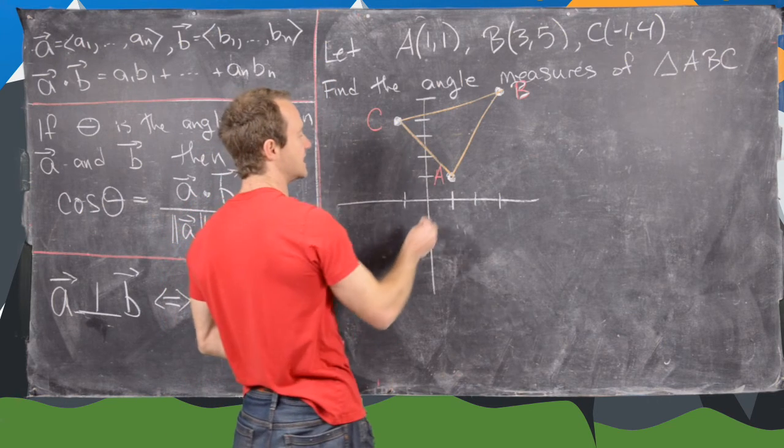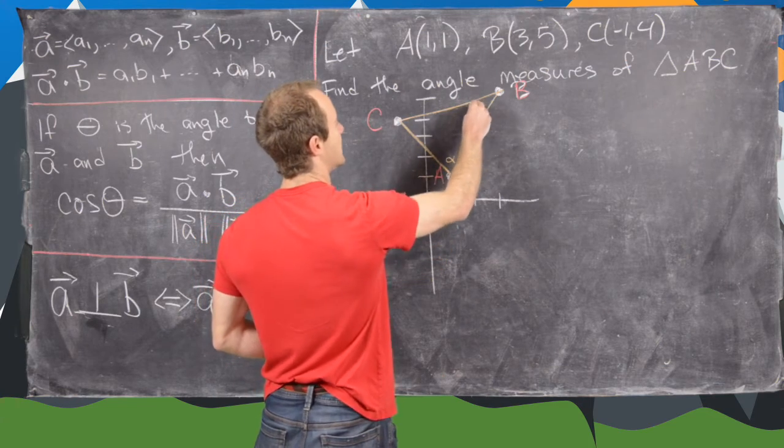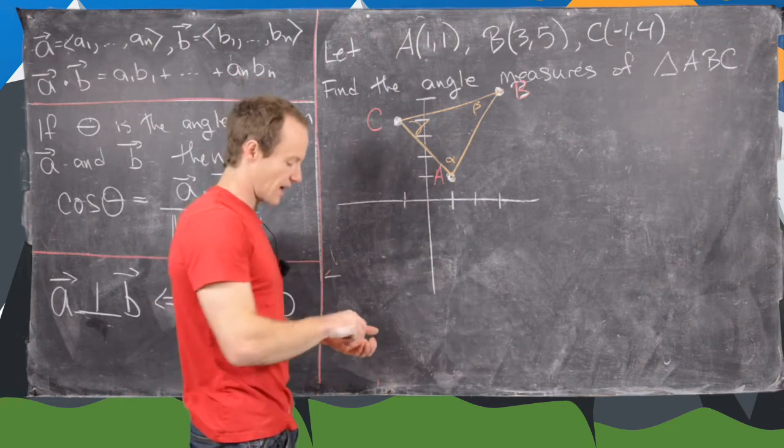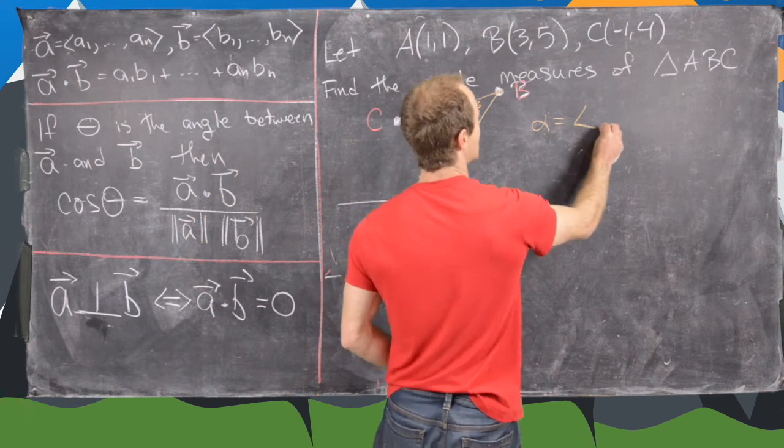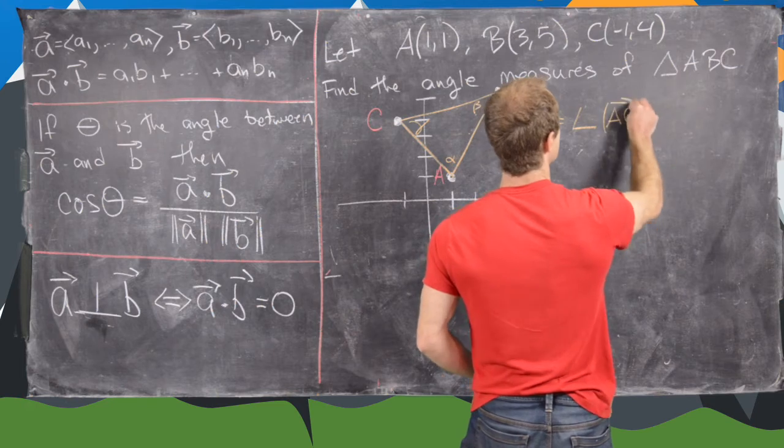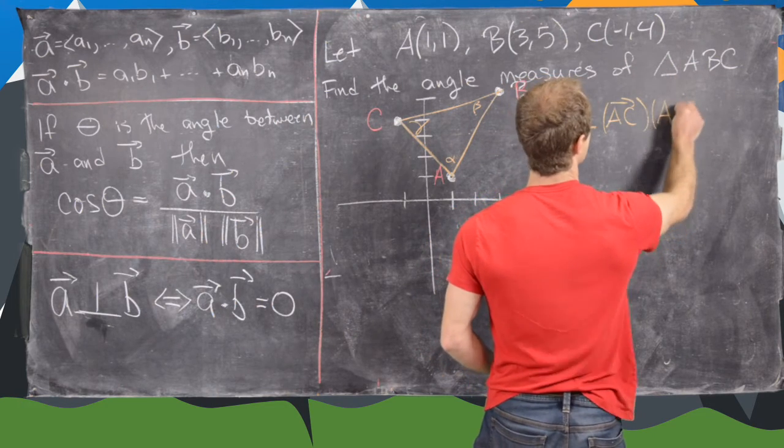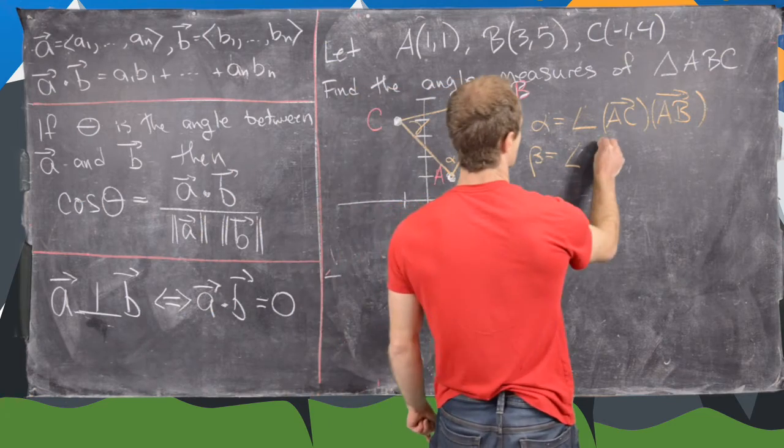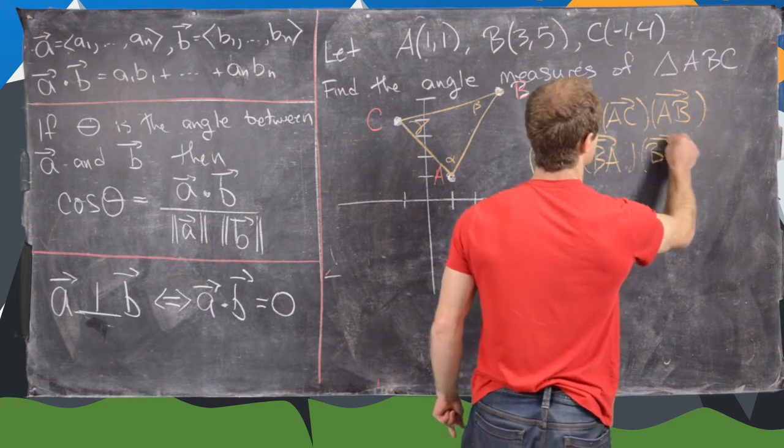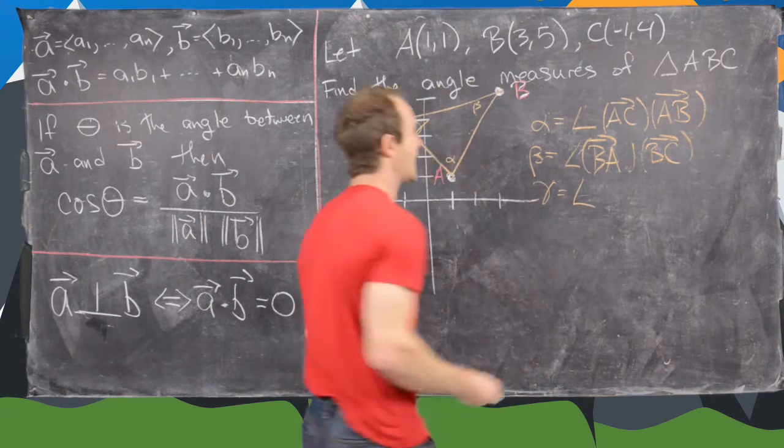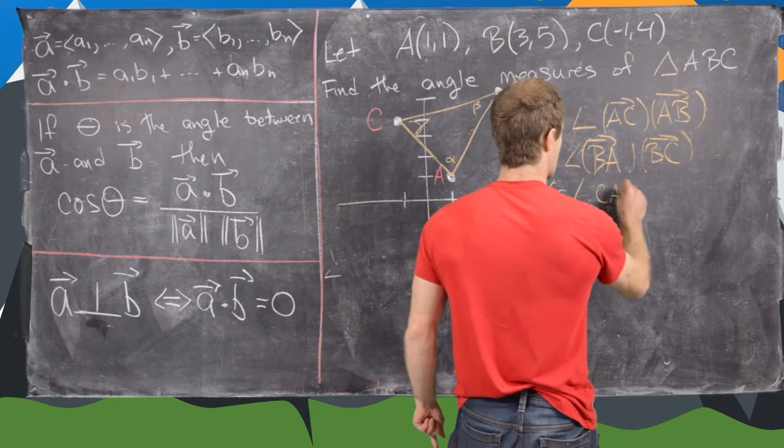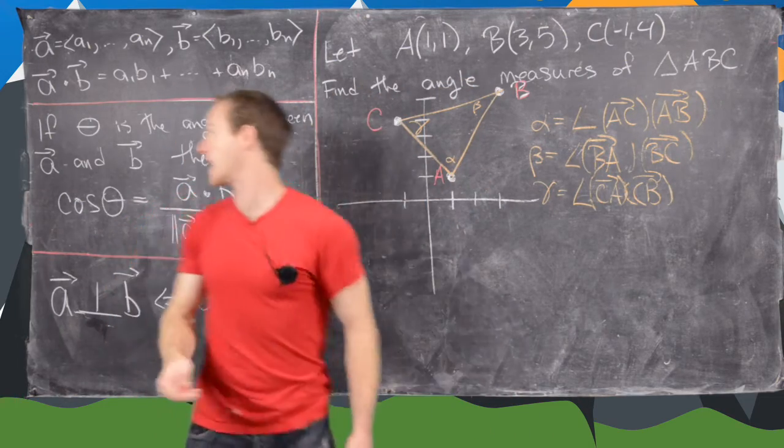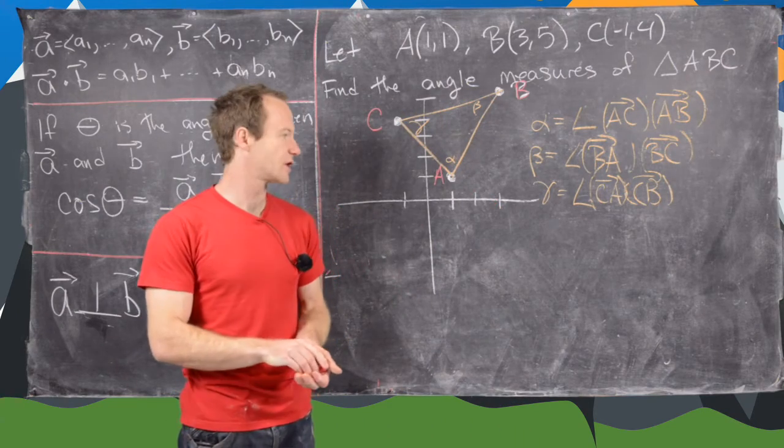And let's say we can label these angles alpha, maybe this one is beta, and then this one is gamma. So notice alpha is the angle between AC and AB. And then beta is the angle between vector BA and BC. And then finally, gamma is the angle between vector CA and CB. But we know how to find the cosine of these angles by this formula right here. Then we can just take the inverse cosine function and we'll have the values.